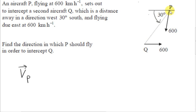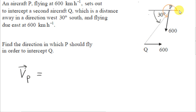Let's look at the velocity of P. This is the absolute velocity of P, which means it's the velocity of the plane relative to the fixed ground. We have the magnitude of VP, but we don't have the direction, so we need to consider an angle. We could use the standard convention of measuring the angle anticlockwise from the positive x-axis, so we would be getting this angle here. The positive x-axis is this axis here, so we're talking about an angle between 180 and 270.